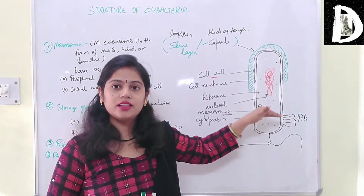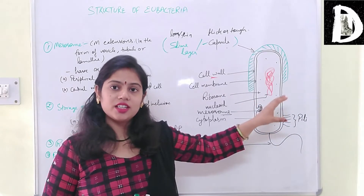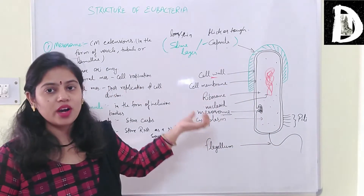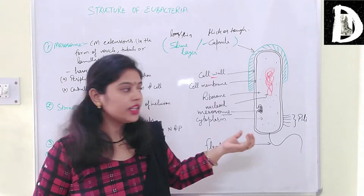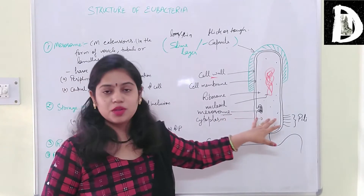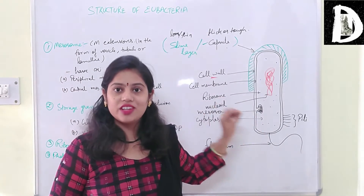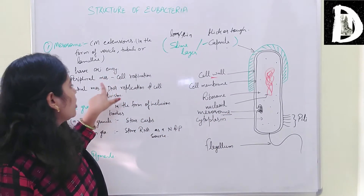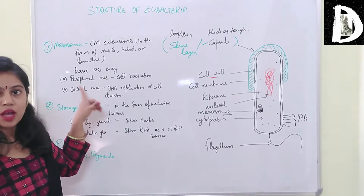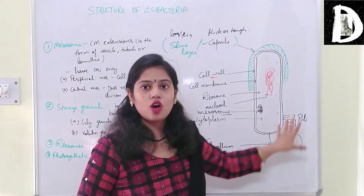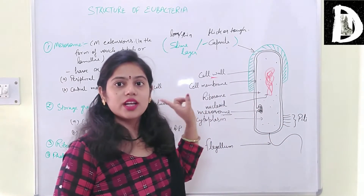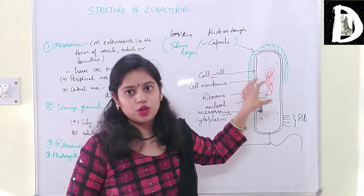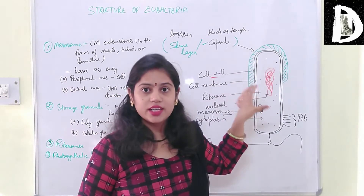The cell membrane invaginates into the cytoplasm, forming special structures that can be vesicles, lamellae, or tubules. There are two types of mesosomes: peripheral mesosomes, which are attached to the cell membrane and present at the periphery, and central mesosomes, which are attached to the nucleoid and present deep in the cytoplasm.